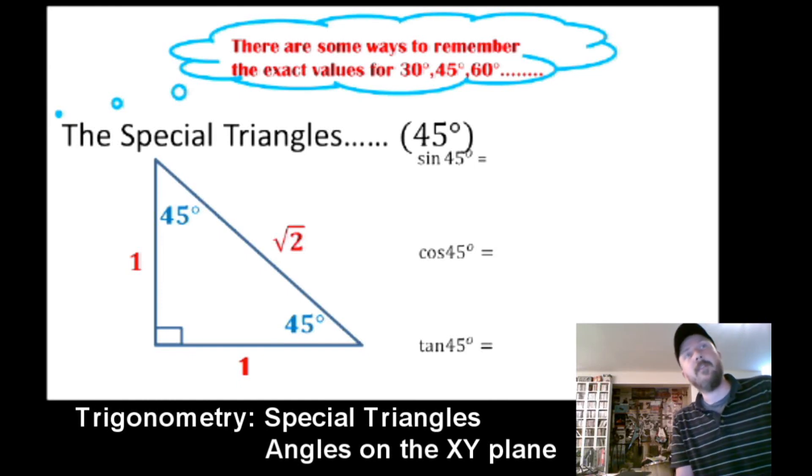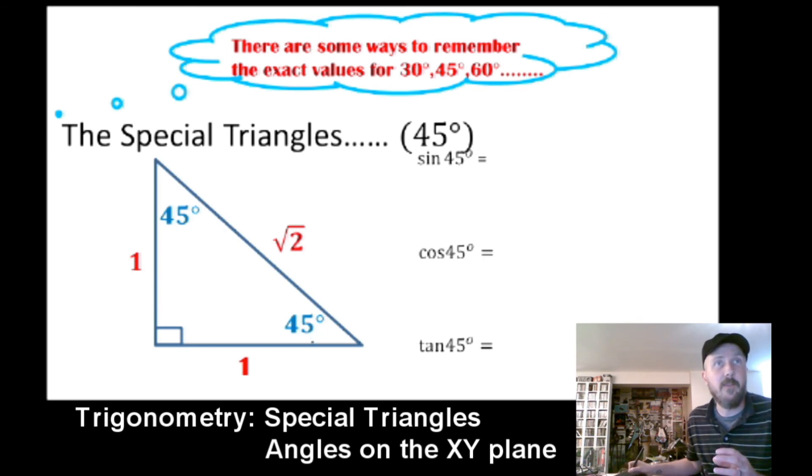Special triangles. Okay, so what it's saying is, and this one's the easiest to remember, this special triangle. So the idea is that we would memorize this triangle. This one is the easiest because in a right triangle, if we have 90 degrees here, and we're trying to remember the exact value for 45, sine 45, cos 45, or tan 45.